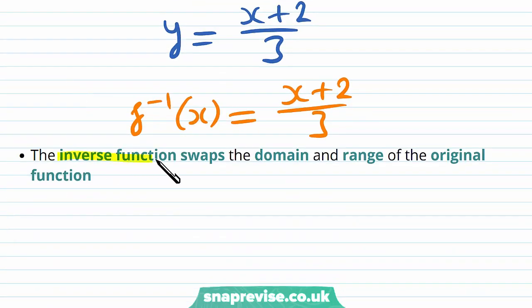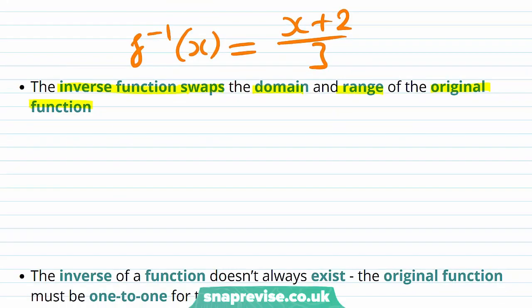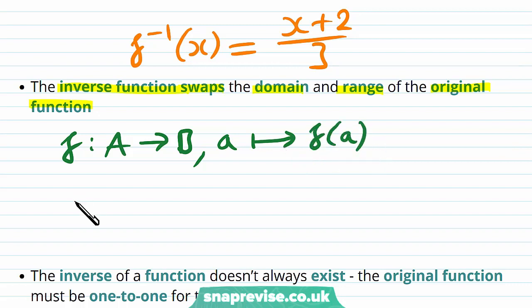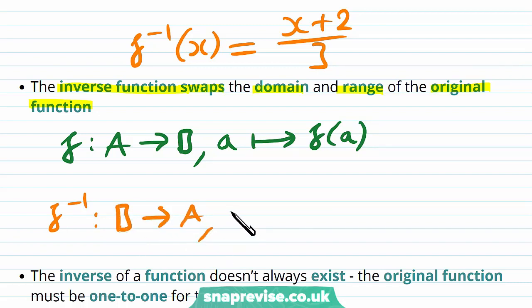We then convert back into function notation: f inverse of x equals x plus 2 over 3. Now the inverse function swaps the domain and range of the original function. If f goes from domain A to range B, taking a to f of a, then f inverse goes from B to A, taking b to f inverse of b.